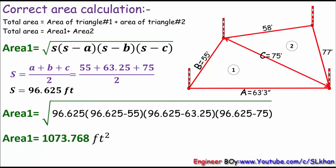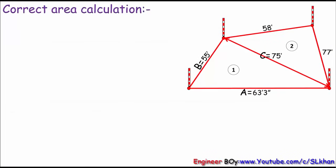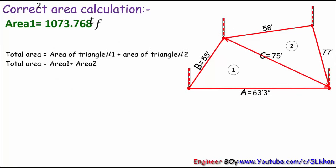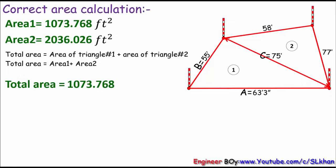Finally, let's add area of both triangles to have the total area of the property. The total area must be area of the triangle first plus area of the second triangle. Our total area equals 1703.768 plus 2036.026, which equals 3739.794 square feet.